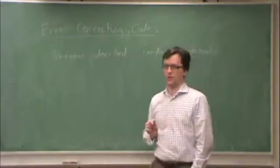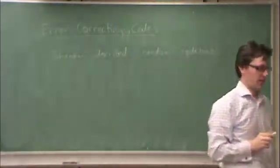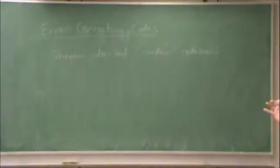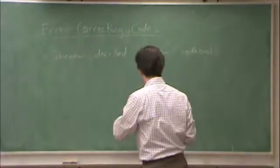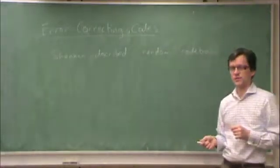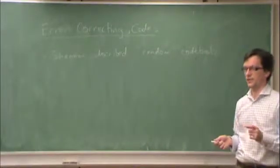In other words, we formed a code book by creating a very large matrix with n columns and 2 to the nr rows, where each row is a code word. We created that code book by selecting every element of that matrix randomly.